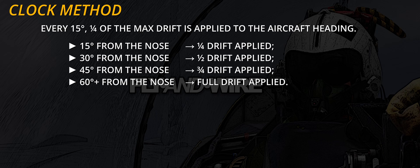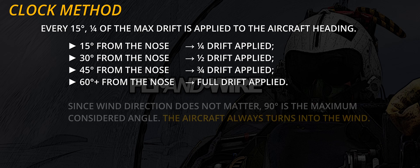If 15 degrees from the nose, one quarter of the drift is applied. If 30 degrees from the nose, one half of the drift is applied. At 45 degrees from the nose, three quarters are applied. Lastly, at 60 degrees or more, full drift is applied. Note that the wind direction does not matter, as the aircraft always turns into the wind.